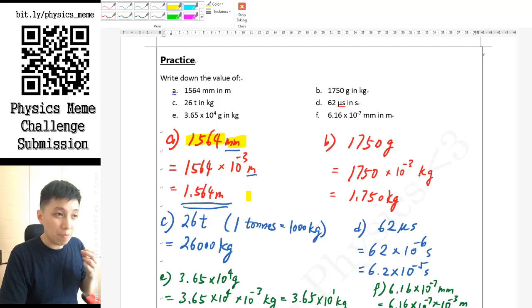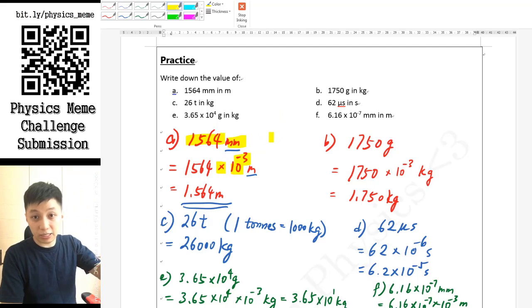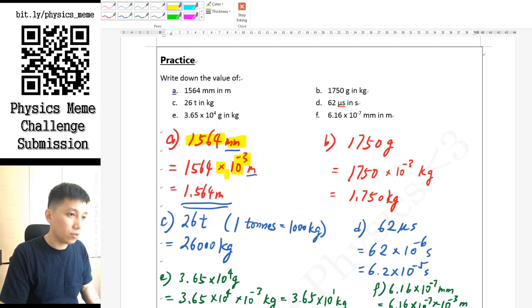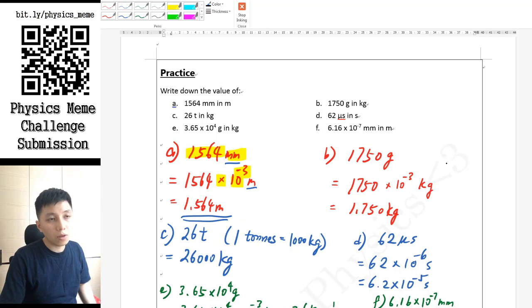For the first one, it's in millimeter, and as you can see from the table above, milli is 10 to the power of negative 3. So you can multiply times 10 to the power of negative 3, converting the milli into 10 to the negative 3, so that you can find out the answer: 1.564 meters.